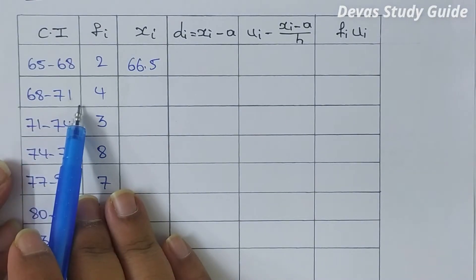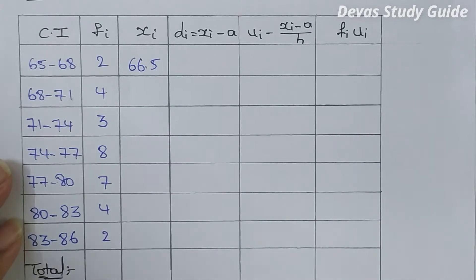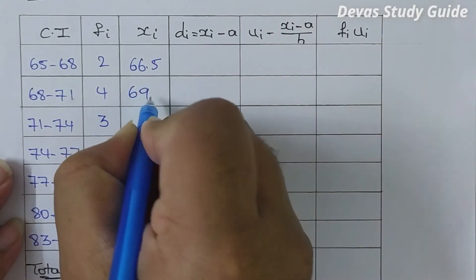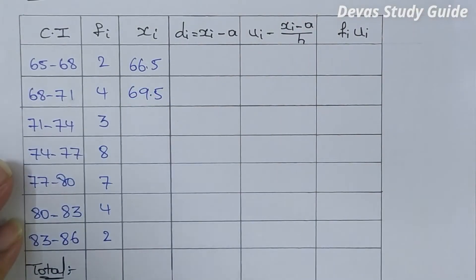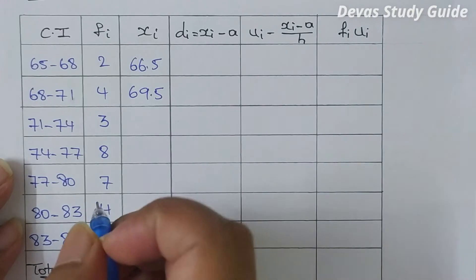Next, for the class interval 68 to 71, the midpoint is 68 plus 71 divided by 2, equal to 69.5. Then for 71 to 74, the midpoint is 71 plus 74 divided by 2, equal to 72.5.